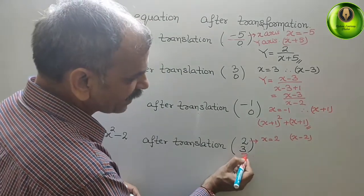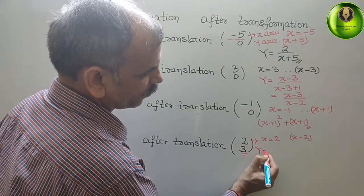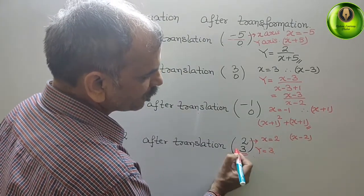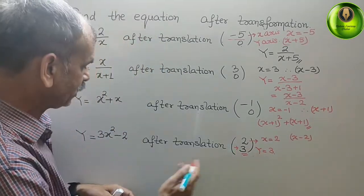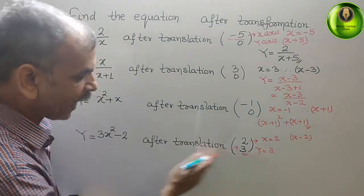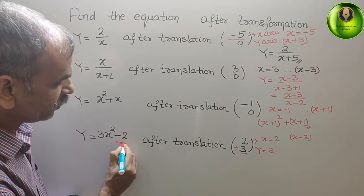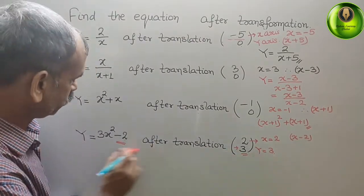But here, y is this. That means plus 3. That means here we have to add y minus this value plus 3 gives you the y value.